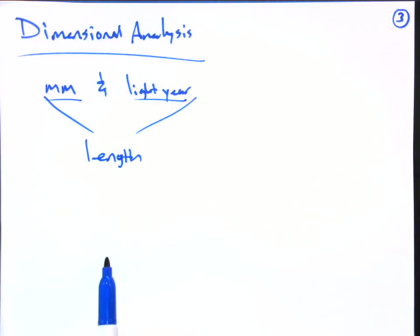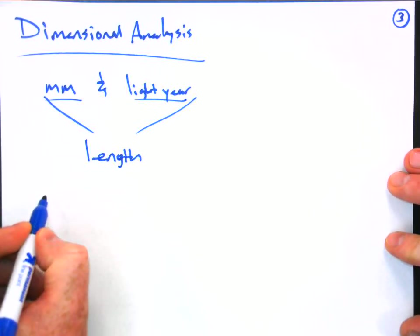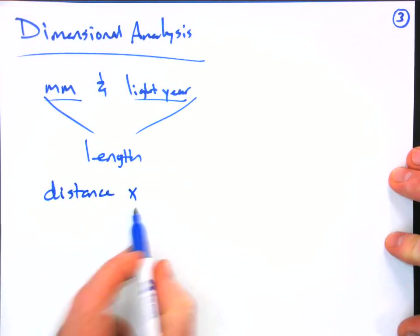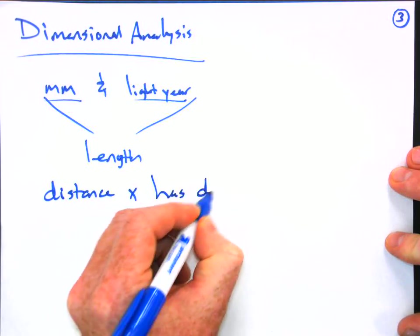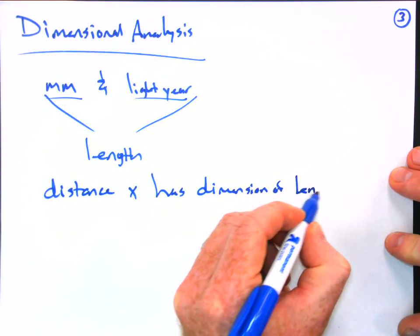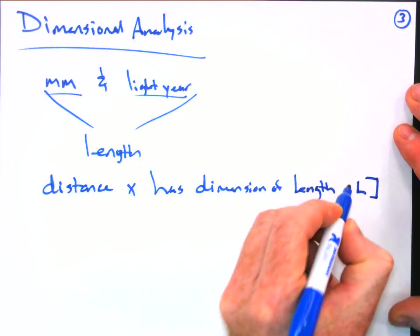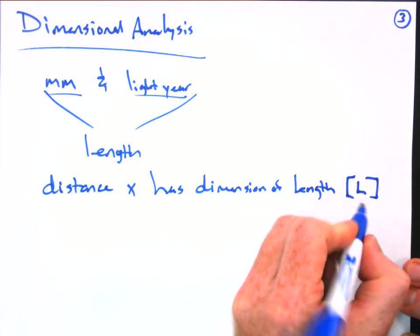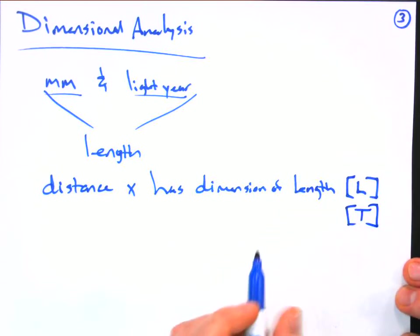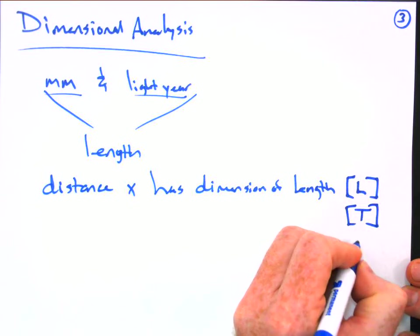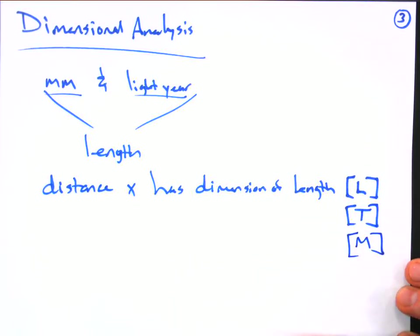This is important because any valid formula in physics must be dimensionally consistent. So if you say that any distance x, like so, whatever the distance is, has dimension of length, then here's how you write that: capital L and put it in brackets. That's how you represent the dimension of length. What about the dimension of time? The dimension of time is just a capital T in brackets. Dimension of mass? Well, you might just use a capital M for mass and put it in brackets.